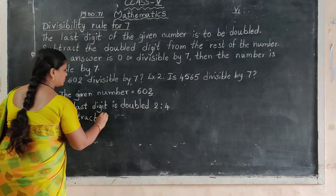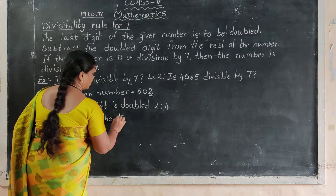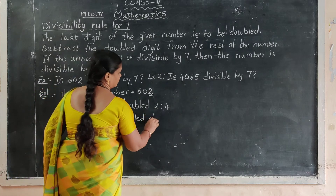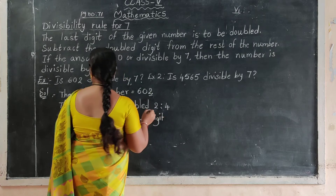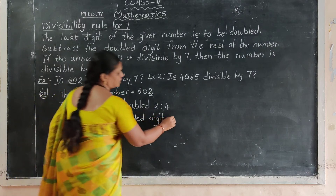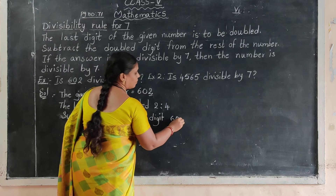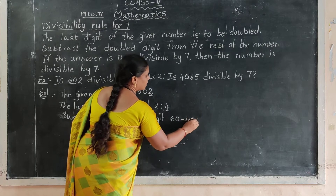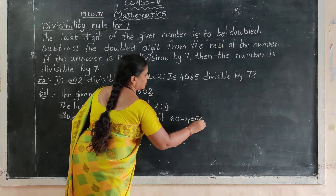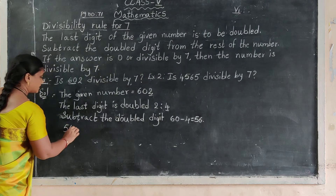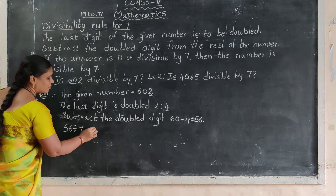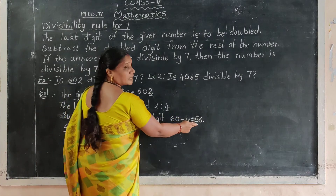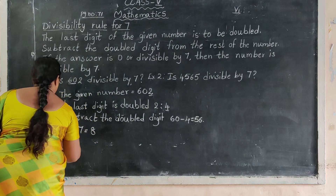Subtract the double digit from the rest of the digits. The rest of the digits are 60. So 60 minus 4 equals 56. Now 56 divided by 7 is 8. So 56 is divisible by 7, and therefore this number is divisible by 7.